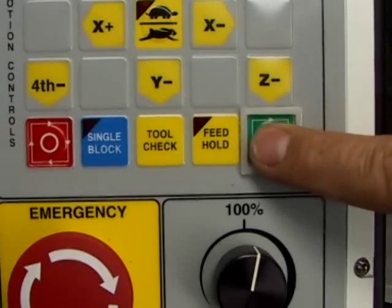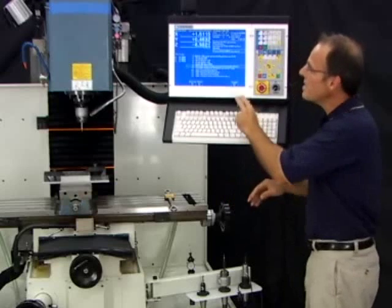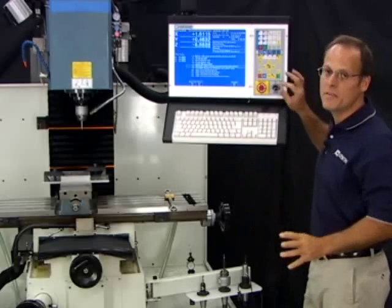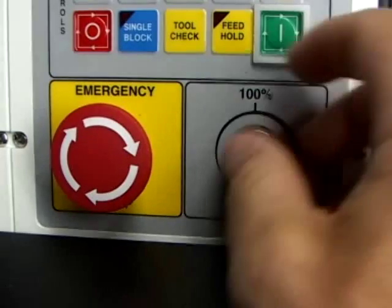I'm going to go ahead and hit the Cycle Start button the second time, and right now it's actually moving to the tool change position. It's moving very slow because I have the feed rate override knob turned down. Now I'm going to speed it up.